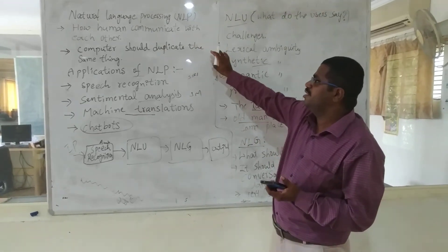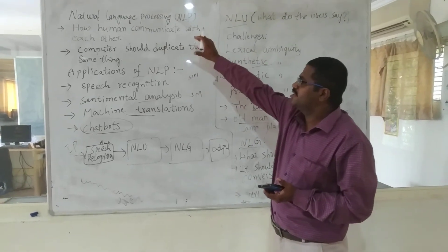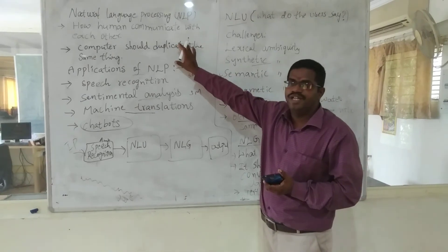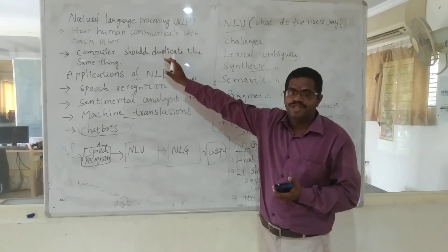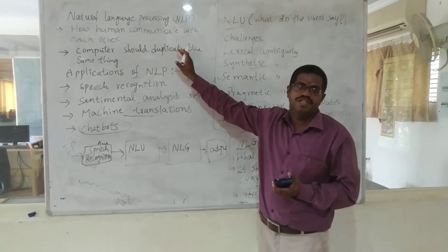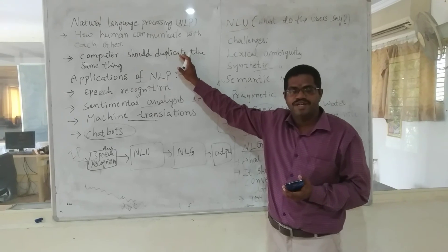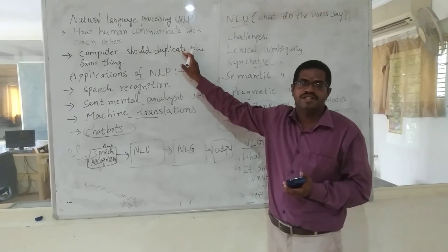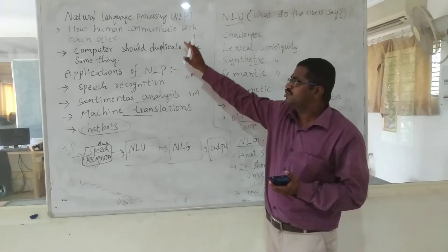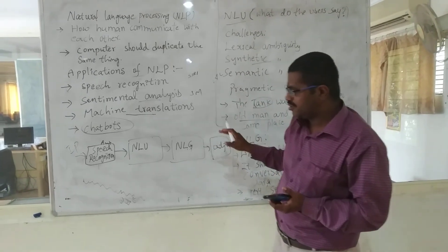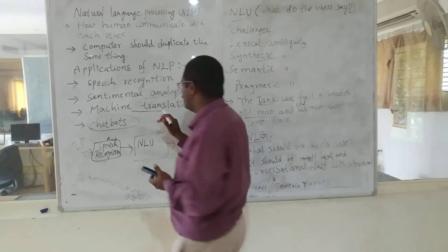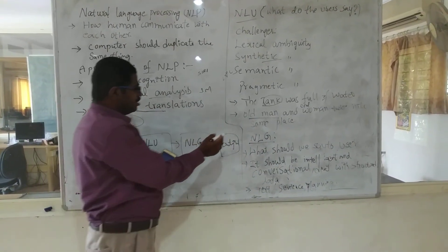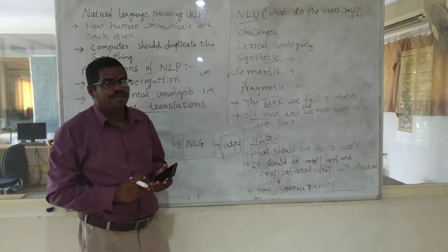So now you know what NLP is. It is a subfield of AI and computer science which always communicates between the computer and the user — whether or not you have technical knowledge about computers. NLP is a very important area. Many concepts today are developed with the help of machine translation and machine learning. These are all the basics about NLP.